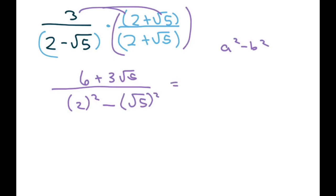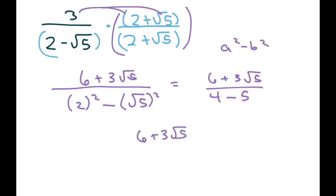This equals 6 plus 3 square root of 5, then we have 4 minus — the square of a square root eliminates it — so you get minus 5, making this negative 1. Or you can just pull out the negative and call this 6 plus 3 square root of 5, or you can distribute the negative as well.